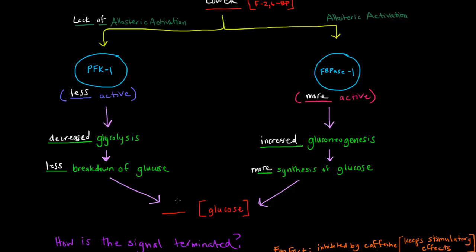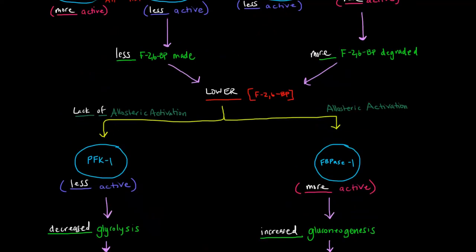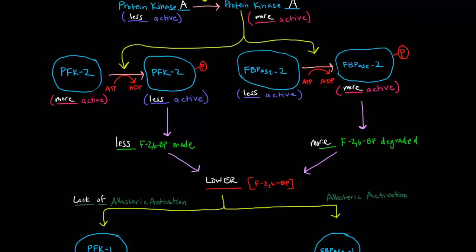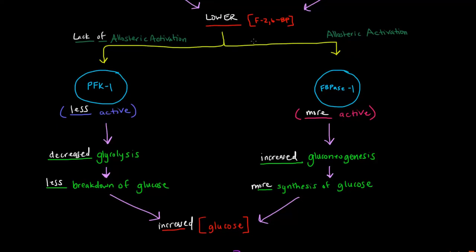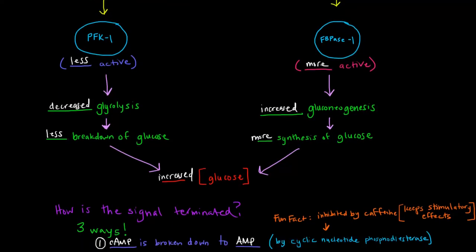So what's the overall effect of that? Well, if we're breaking glucose down less and we're making more of it, we're making more glucose. We have an increased glucose concentration, which is what we wanted glucagon to do. So what glucagon does is it lowers fructose-2,6-bisphosphate concentration by altering the activity of these enzymes here. And overall, this lower fructose-2,6-bisphosphate concentration alters the activity of this enzyme and this enzyme. And that is what triggers the increased glucose concentration. That's the overall process and how it works.